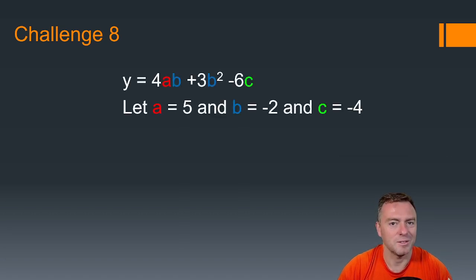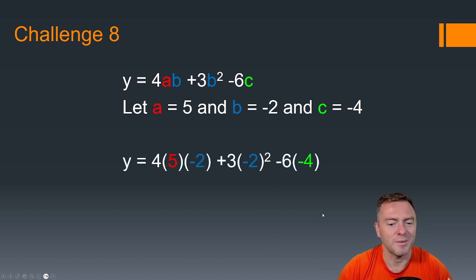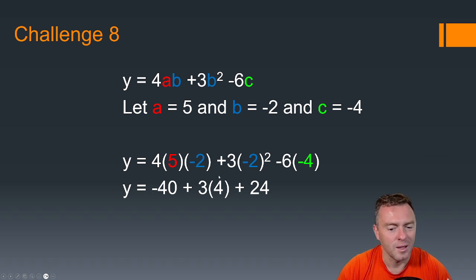And this one, just pause the video, have a go, see if you can do this one. So what you should have found is you've got 4 times 5 times -2 plus 3 lots of -2 all squared minus 6 times 4. So when you solve this, 4 times 5 times -2 gives us -40. In this case here, it's plus 3 times -2 all squared, so we do this first.